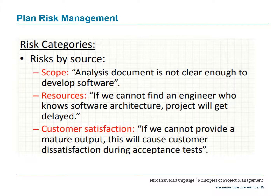Other ways of categorizing risks by source include scope risks — for example, if the analysis document is not clear enough to develop software, that is a scope risk. Resource risks — if you cannot find an engineer who knows software architecture, the project will get delayed. In a construction example, if you cannot find the right number of masons, that is a resource risk. Customer satisfaction risks — if you cannot provide a mature output, it will cause customer dissatisfaction during acceptance testing, and you may identify this as a customer satisfaction-related risk during planning.